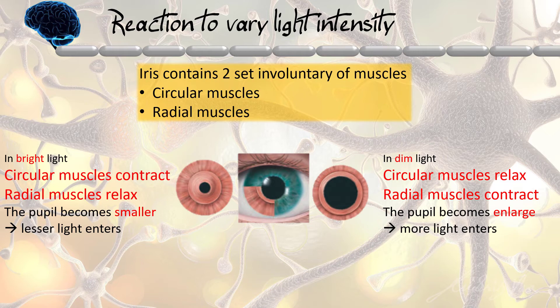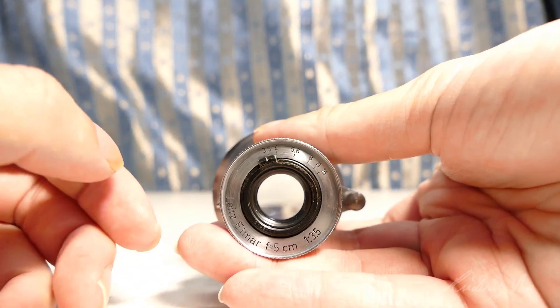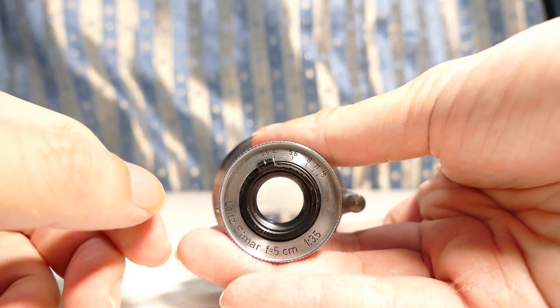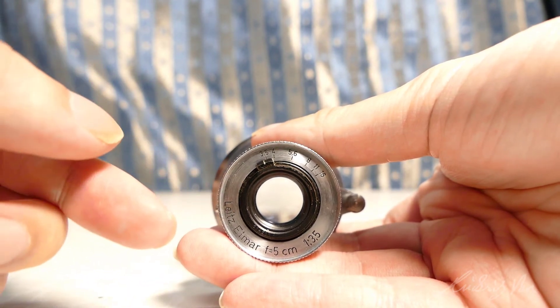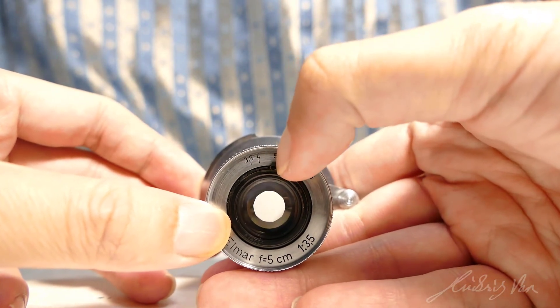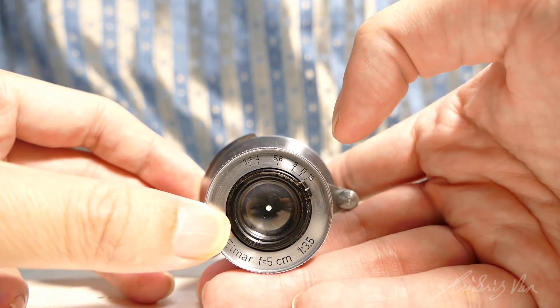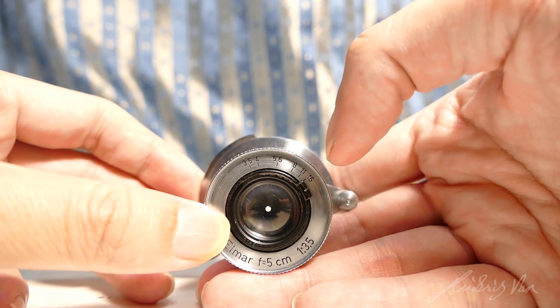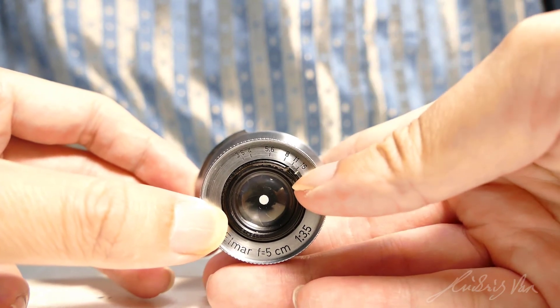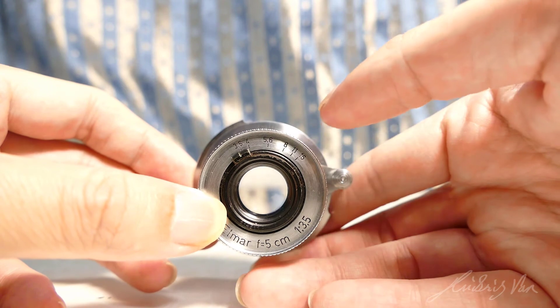If you have a lens lying around, you can imagine that the blades are the circular muscle. If you don't have a lens, just look at my lens here. When the intensity of light increases, the circular muscle will contract and you can see the pupil becoming smaller. When the light intensity decreases, the size of the pupil will increase, allowing more light to pass through.